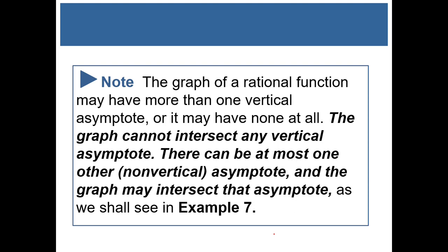Note that the graph of a rational function may have more than one vertical asymptote, or none at all. The graph cannot intersect any vertical asymptotes. There can be at most one other non-vertical asymptote, and the graph may intersect that asymptote.